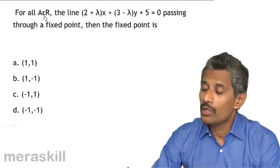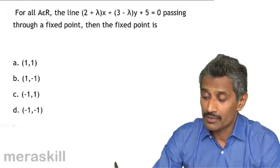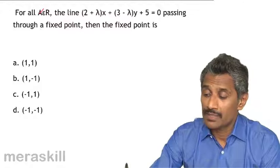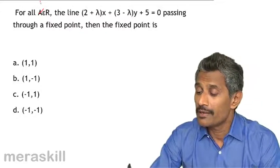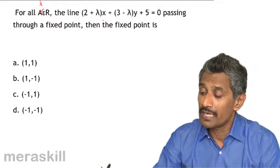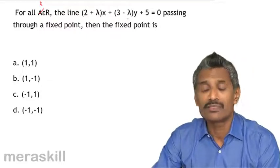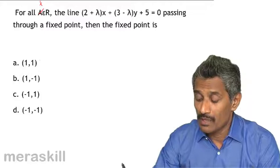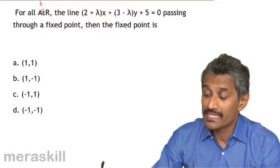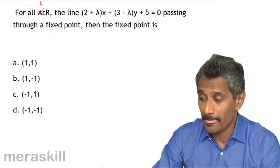we have for all lambda, this should be lambda. So, for all lambda belonging to R, the line so and so passing through a fixed point, then the fixed point. This again means which among these points lies on this line, right?